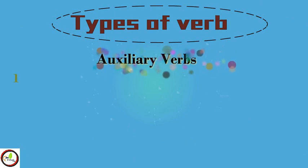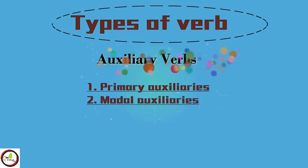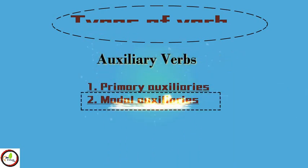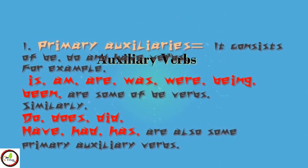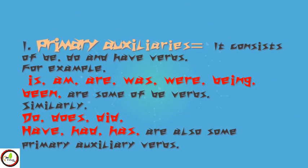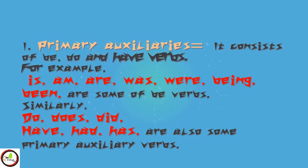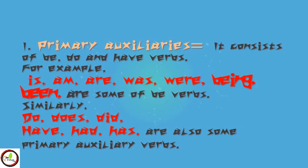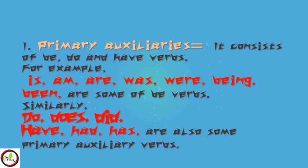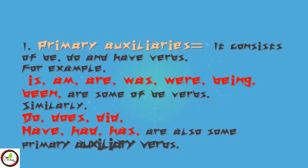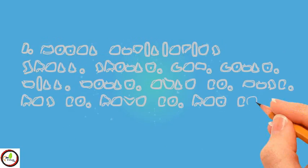Type 1: Auxiliary verbs. Auxiliary verbs can be further divided into primary auxiliary verbs and modal auxiliary verbs. Primary auxiliaries consist of the verbs be, do, and have. For example, is, am, are, was, were, being, been are some of the be verbs. Similarly, do, does, did, have, had, has are also some primary auxiliary verbs.